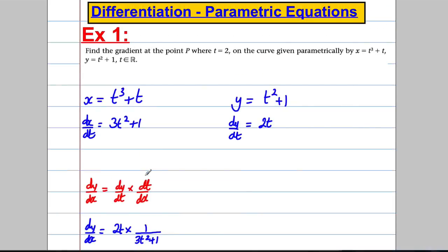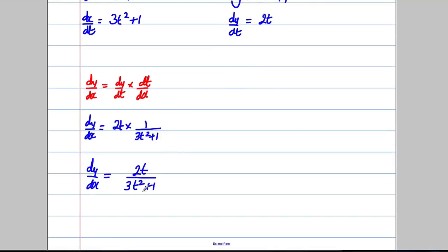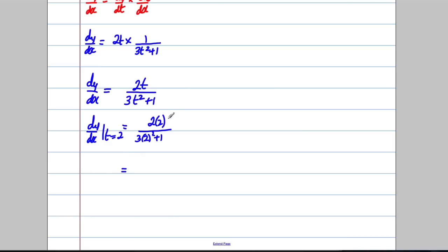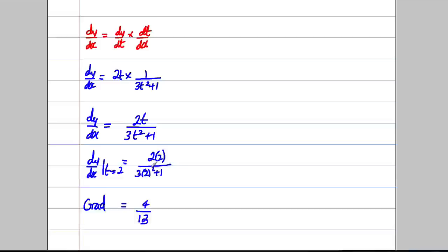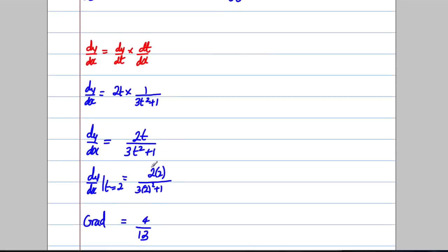Applying the formula: dy/dx = 2t × (1/(3t² + 1)) = 2t / (3t² + 1). That is the general gradient function in terms of T. Now substituting T = 2: dy/dx = (2×2) / (3×4 + 1) = 4/13. So the gradient at P is 4/13.